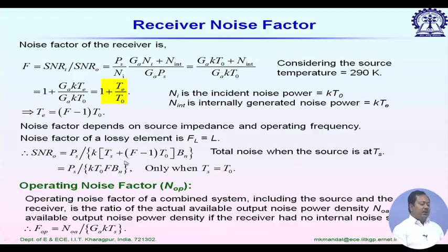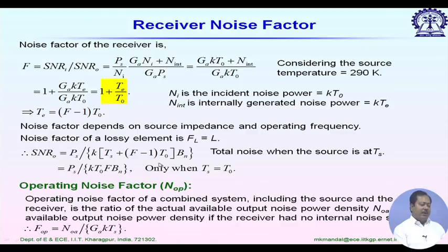That simplification only holds when T_s equals T_0, which is 290 Kelvin. If the source temperature differs from T_0, we must use the full correction and consider the effects of both T_s and T_e separately.